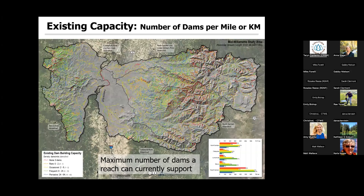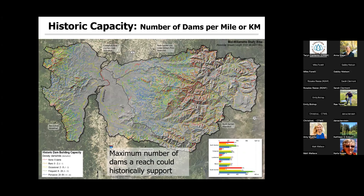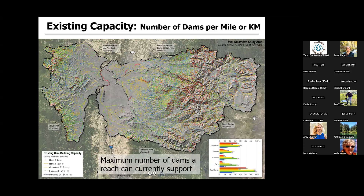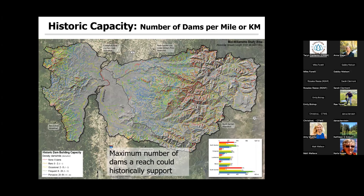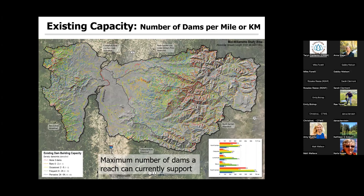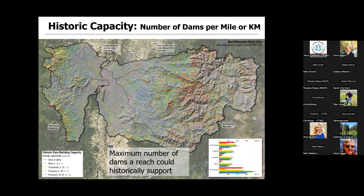This is the output in the upper Willamette in Oregon. We can look at historic compared to existing and toggle back and forth — historically there was a lot more blue, and we lost some of that capacity due to land use and changes in vegetation. These capacity outputs are one of the important outputs of the BRAT model.